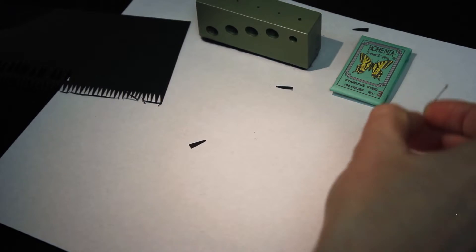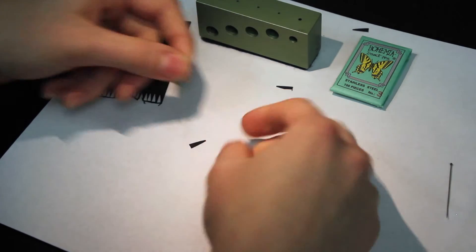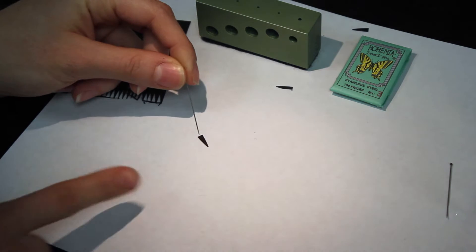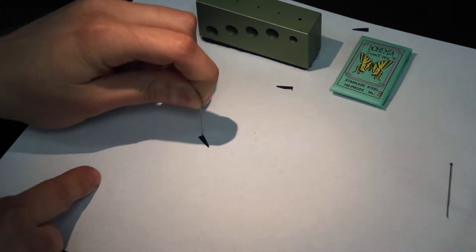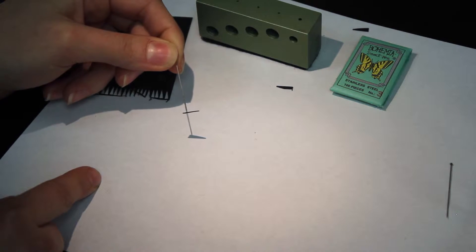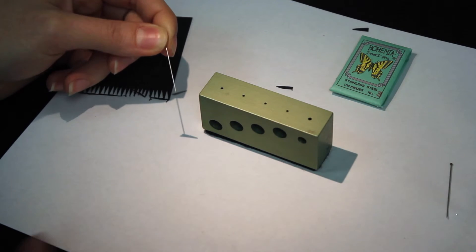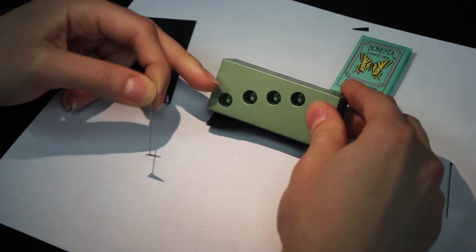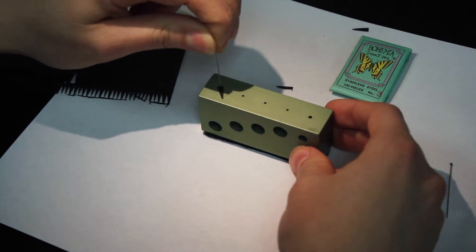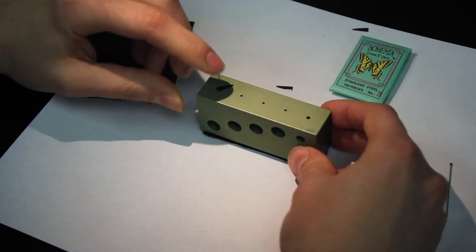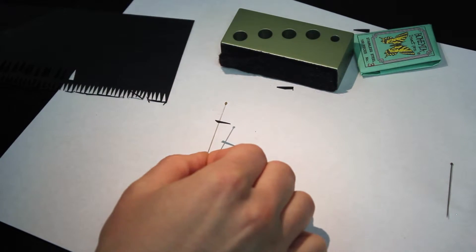Using your number 3 stainless steel insect pin, you're going to lightly push at the base of your point at its center so that it sticks to the bottom of your pin. Using your pinning block, you want to use the deepest hole and push your pin through. This should be your result.